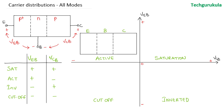In the active region, the emitter junction would be forward biased, hence the depletion region width is small, and the collector junction is reverse biased, hence the depletion region width is large.